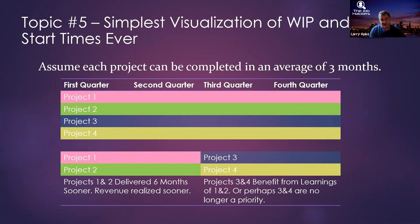Here's a simple visualization from Reinertsen's book. I have four projects — or features, or stories — four things. Let's assume that for each work item, they average three months to complete. If I start all of them at the same time and work on all of them simultaneously, theoretically it would take me 12 months to complete them all. Reinertsen calls this a CEO diagram because it's so easy a CEO could understand it.